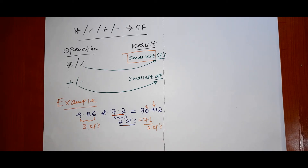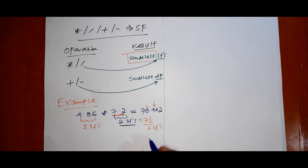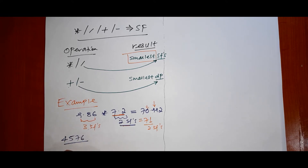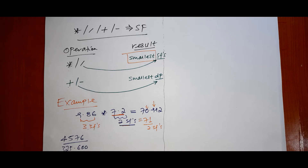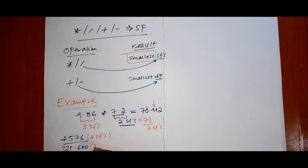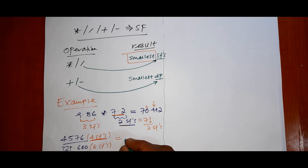Significant figures in multiplication is now clear. For division, let's consider another example: 4576 divided by 325.600. This number — 4576 — has four significant figures. This one — 325.600 — contains six significant figures. So the result should be on the level of the one with four significant figures.